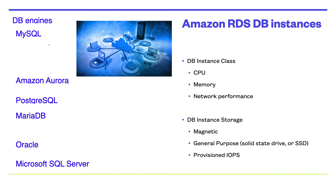In AWS RDS, you have multiple options to create a database instance. Your database instance is an isolated database environment that can contain multiple user-created databases. It can be accessed using the same tools and applications that you use with a standalone database instance. The resources in a database instance are determined by its database instance class, and the type of storage dedicated for your database instance. Database instances and storage differ in performance characteristics and pricing model, which enables you to customize your performance and cost to the needs of your database.